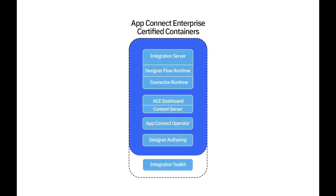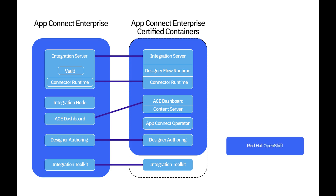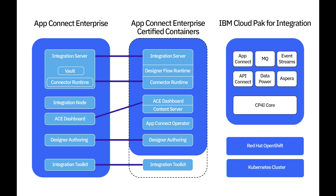The IBM AppConnect Enterprise certified container is based on an image of IBM AppConnect Enterprise software product and is offered as an executable package that you can deploy and run within containerized environments. You can deploy the ACE certified container independently into a Red Hat OpenShift container platform or a Kubernetes cluster, or deploy it as part of IBM Cloud Pak for Integration. IBM Cloud Pak for Integration leverages the ACE certified containers to provide ACE functionality as part of the unified platform for building and managing a wide range of integration solutions.